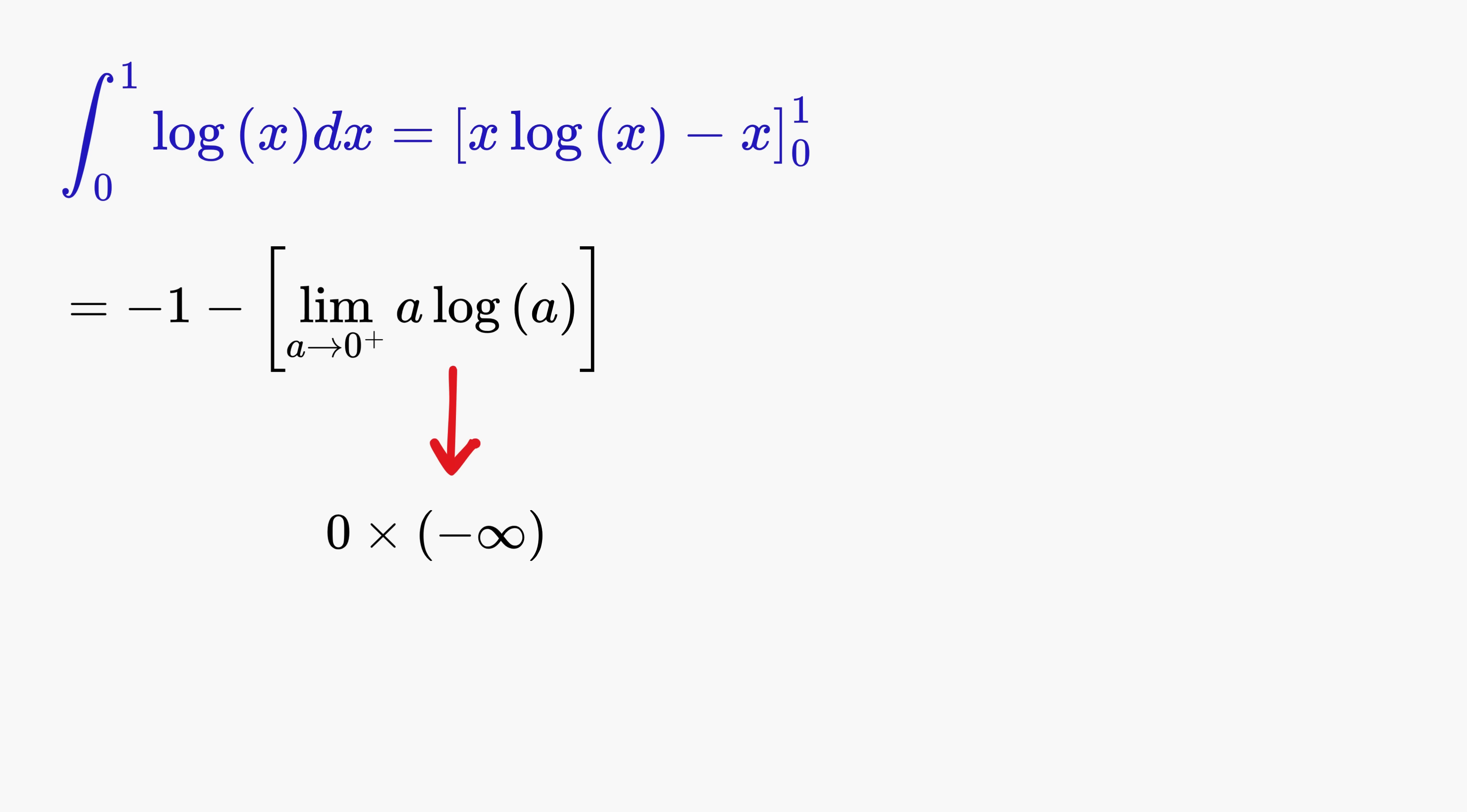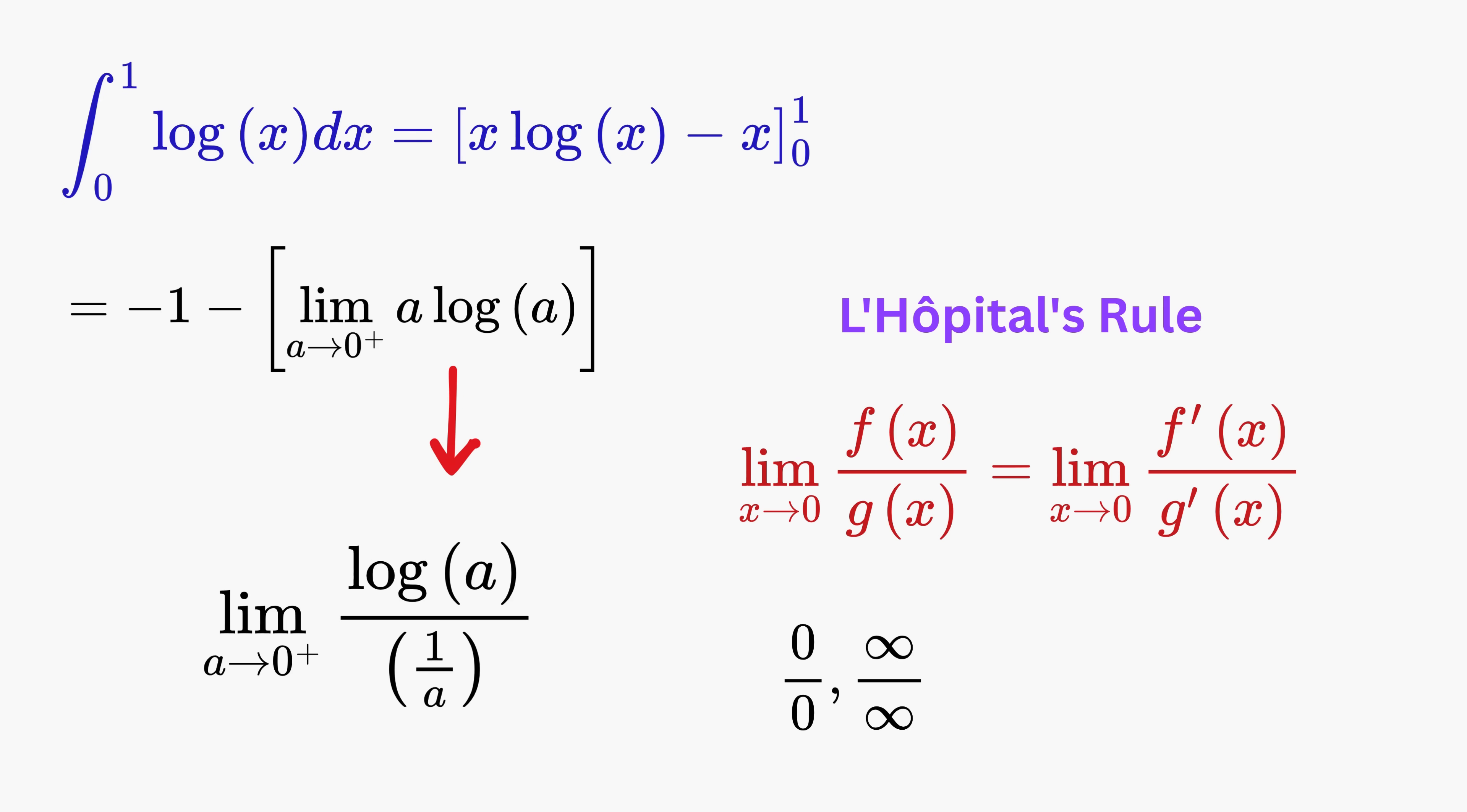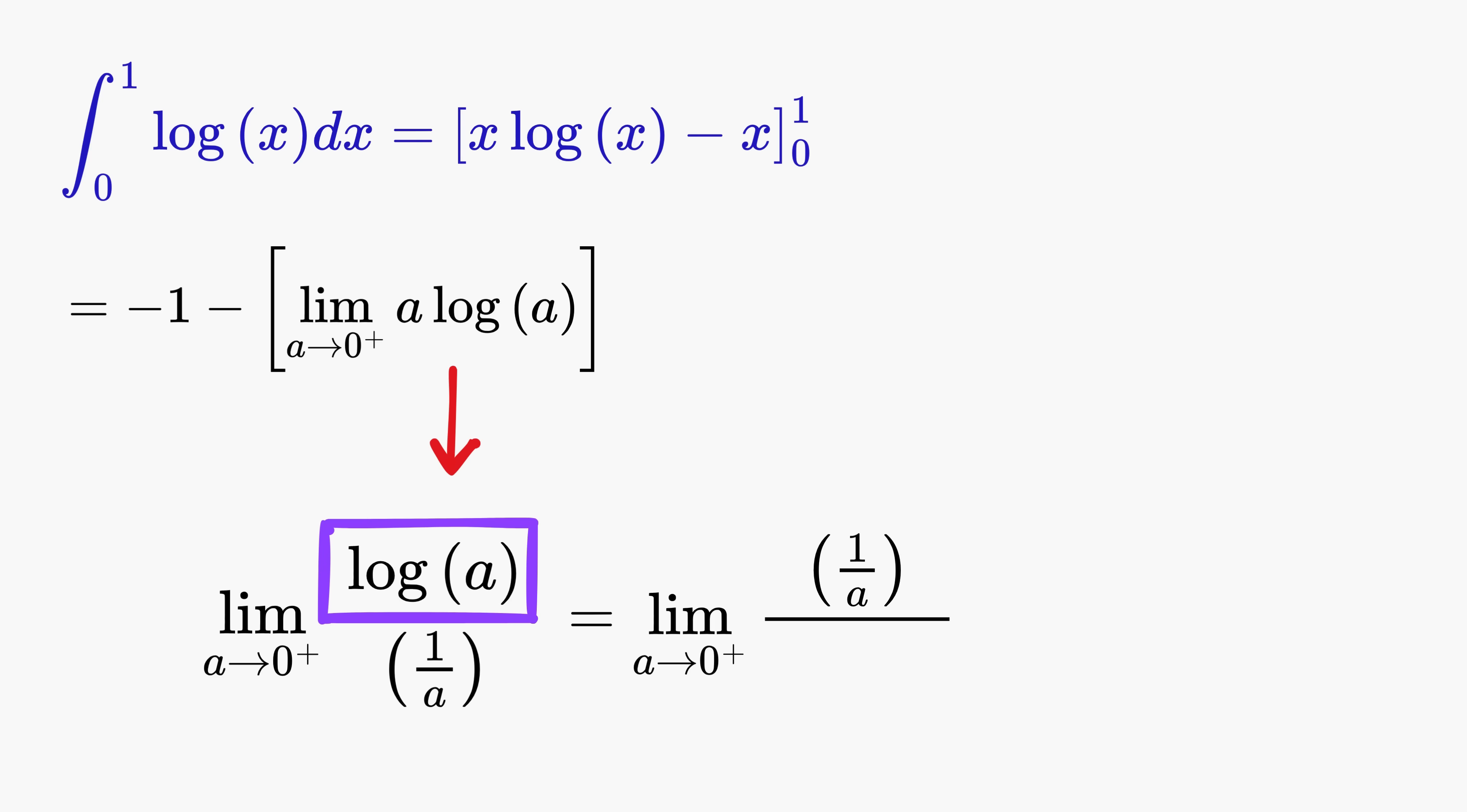This creates an indeterminate form because a goes to zero while log(a) goes to negative infinity. To resolve this, we rewrite this product as a quotient, which means log(a) divided by this a becomes 1/a in the denominator. Now we will apply L'Hopital's rule, which says that if a limit results in an indeterminate form, then we differentiate the numerator and the denominator separately and then evaluate the limit again. After differentiating the numerator, we get 1/a, and differentiating the denominator gives minus 1/a^2. This fraction becomes negative a, and thus when a approaches zero, the limit turns out to be zero.